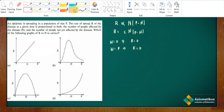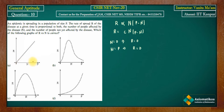Checking the options: in option A, when n is 0 then r is 0, but when n is p then r is not 0, so option A is wrong. In option B, when n is 0 then r is 0, but when n is p then r is not 0, so option B is also wrong. In option C, when n is 0 then r is 0, and when n is p then r is also 0 — this satisfies both conditions. In option D, when n is 0 then r is 0 but when n is p then r is not 0, so option D is wrong.